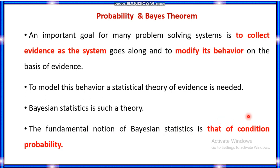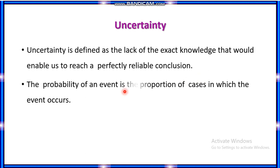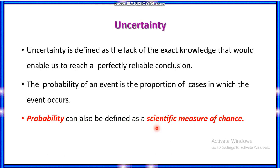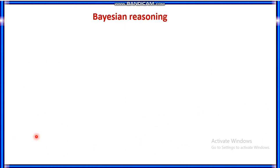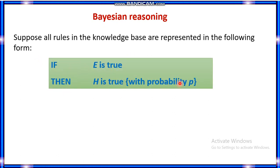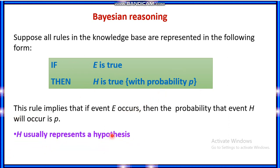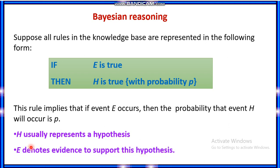The fundamental notion of Bayesian statistics is conditional probability. Uncertainty is defined as a lack of exact knowledge that would enable one to reach a perfectly reliable conclusion — that is, lack of exact knowledge yet still arriving at a conclusion. The probability of an event is a proportion of cases in which the event occurs, also defined as a scientific measure of chance. Based on reasoning, a rule exists: if E is true then H is true with probability P. This implies that if event E occurs, the probability that event H will occur is P. H usually represents a hypothesis and E denotes evidence to support this hypothesis.